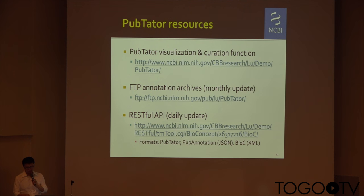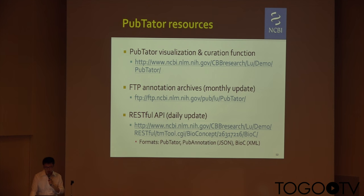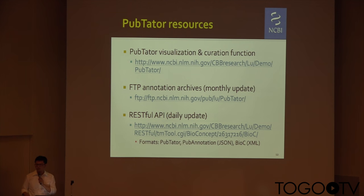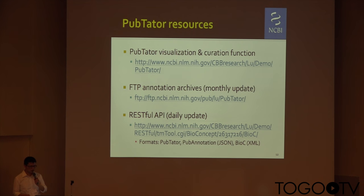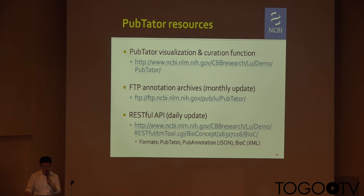So how to do that? We are not only providing a visualization function, but also we provide an FTP annotation archive, which saves all of the annotation results of the five concepts, including gene, disease, chemical, species, and mutations. We also provide users a RESTful API, which is updated daily, and users can download the results with a simple URL.